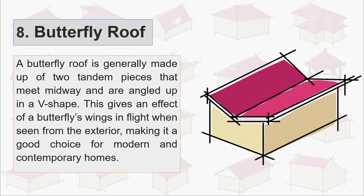Eighth is butterfly roof. A butterfly roof is generally made up of two tandem pieces that meet midway and are angled up in a V shape. This gives an effect of a butterfly's wings in flight when seen from the exterior, making it a good choice for modern and contemporary houses.